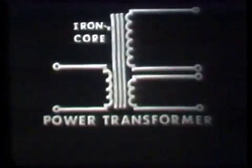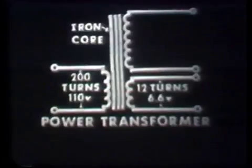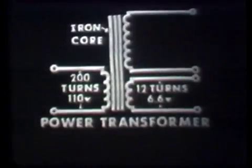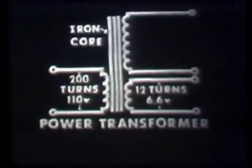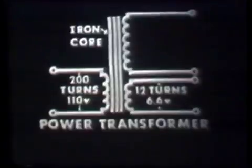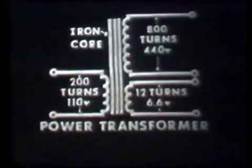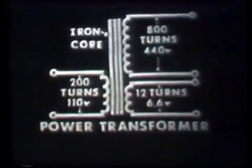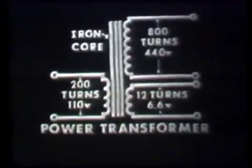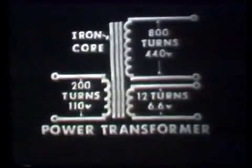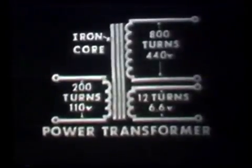One of the secondaries has fewer turns than the primary. Therefore, it produces less voltage than that applied to the primary. The other secondary, though, has more turns and thus produces more voltage. You'll also notice that the power transformer is constructed with an iron core.